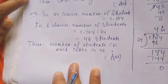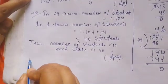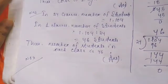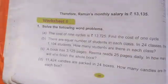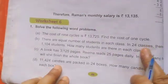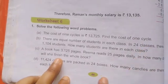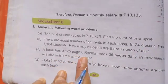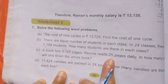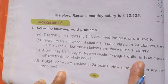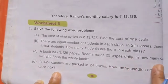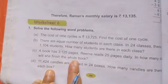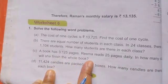Now we solve question number 3 (C). A book has 3,125 pages. Rima reads 25 pages daily. In how many days will she finish the whole book?